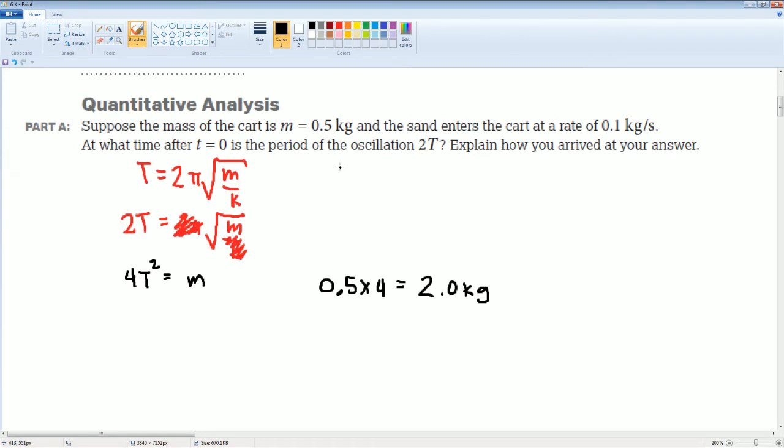Why? Because if I put in 2 here—2 kilograms here—the math works out so that I can double the period. You should see it from here how I got 4 times. 4 times 0.5 got me that 2.